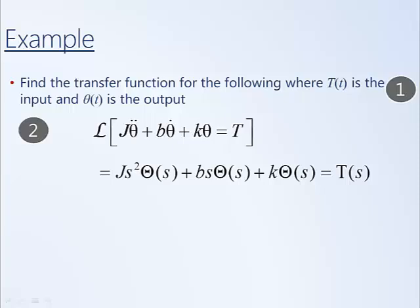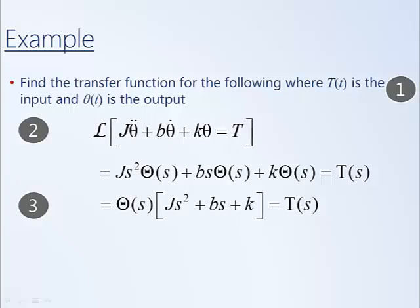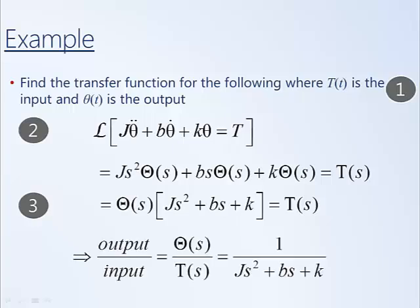The third step is then to rearrange this into the form output over input. So on the left, we can factor out theta(s), leaving us with a polynomial J*s^2 + b*s + k. We can divide T(s) to the left, divide the polynomial to the right, and that gives us the form of our transfer function output over input.